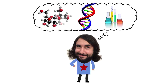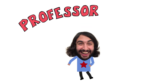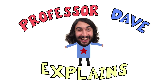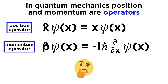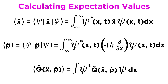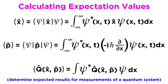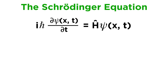Professor Dave Explains. In the two previous tutorials we learned about a number of quantum operators, as well as the wave function. We also learned how to calculate expectation values, which represent the way to determine the results we can expect when we measure specific variables for a quantum system. Now it's time to put it all together so that we can revisit the Schrödinger equation in more depth.